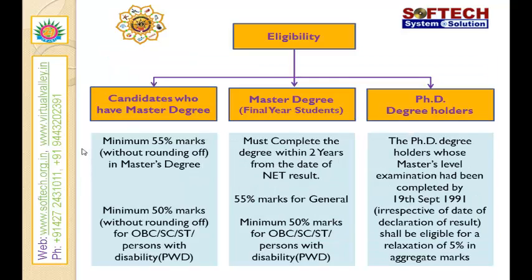On seeing the eligibility, three different eligibilities are being set. First, candidates must have an aggregate of 55% marks for candidates under the general category. The 55% mark does not include rounding of marks such as 54.5 or 54.6 etc. For students under categories such as OBC, SC, ST, and physically challenged, candidates should obtain a minimum of 50%, which also does not include rounding of marks.